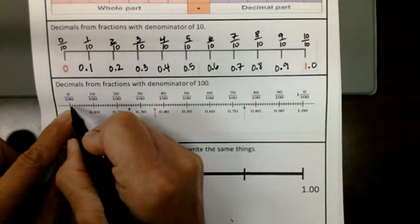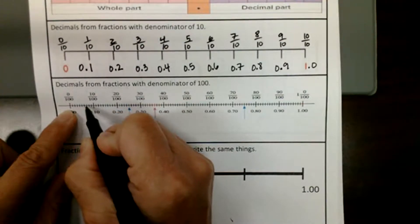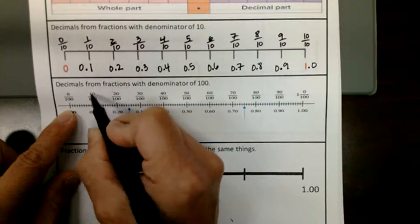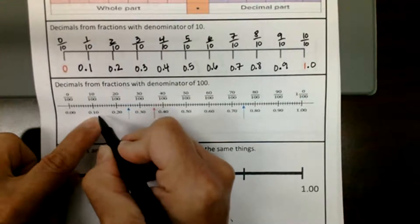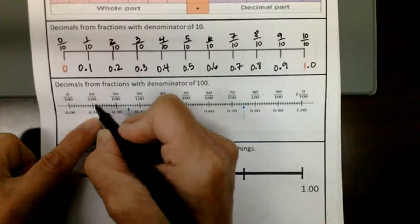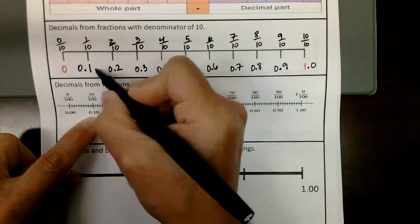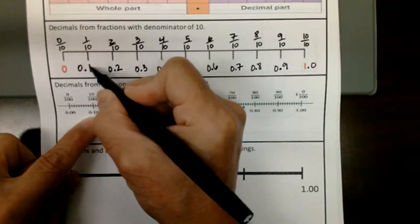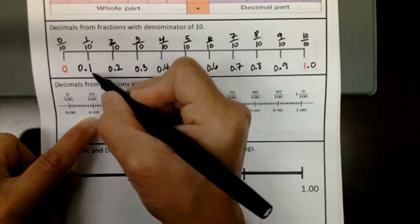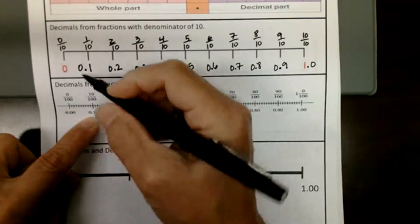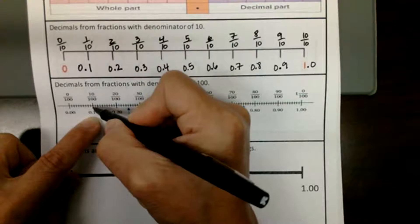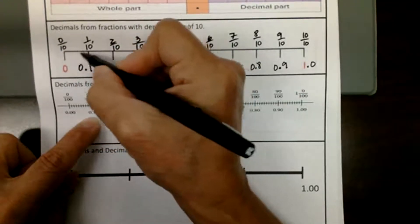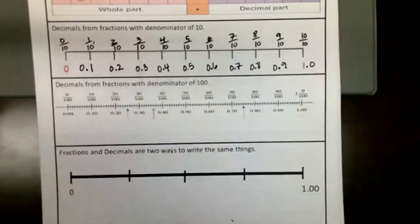From here to here we have ten of them: one, two, three, four, five, six, seven, eight, nine, ten. We have ten one-hundredths. Ten one-hundredths is written like this: zero point one zero. That zero is in the one-hundredths place. Notice, though, that ten one-hundredths is the same as one-tenth. One-tenth as a fraction, one-tenth as a decimal, ten one-hundredths as a fraction, ten one-hundredths as a decimal — it's just that the pieces are a lot smaller. Ten one-hundredths is ten tiny little pieces; one-tenth is one little bit bigger piece. It's just like what we were doing with fractions. Decimals and fractions basically do the same thing.